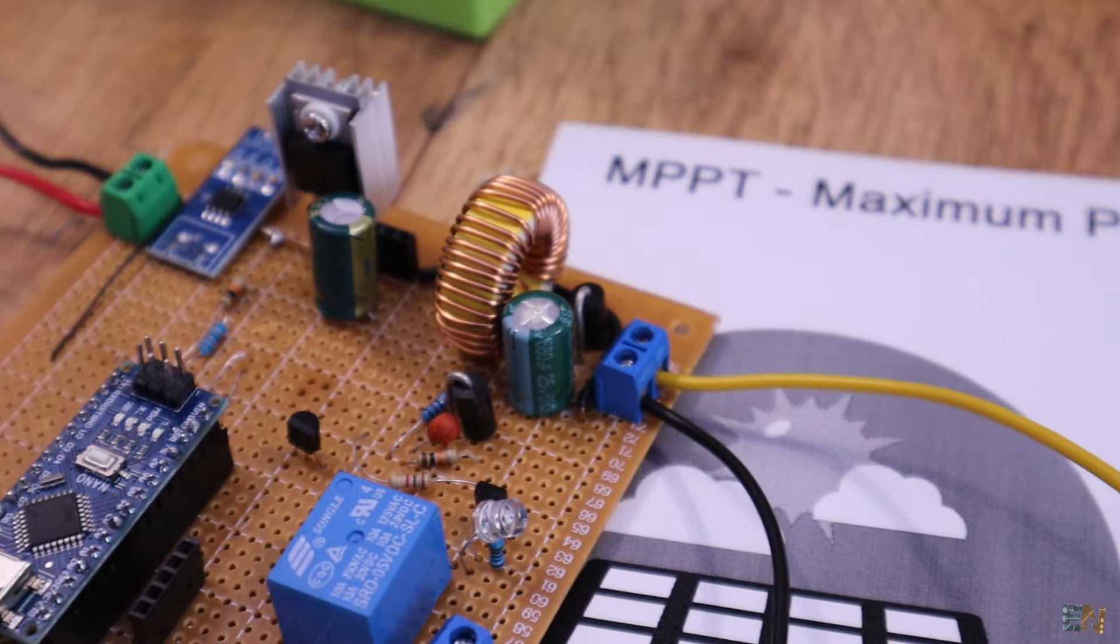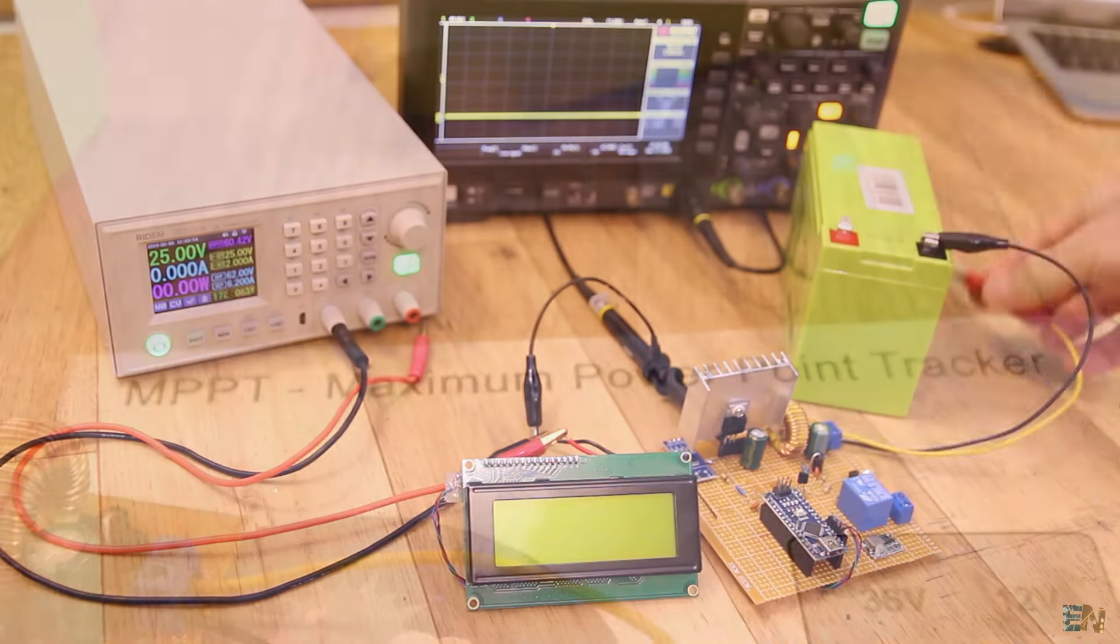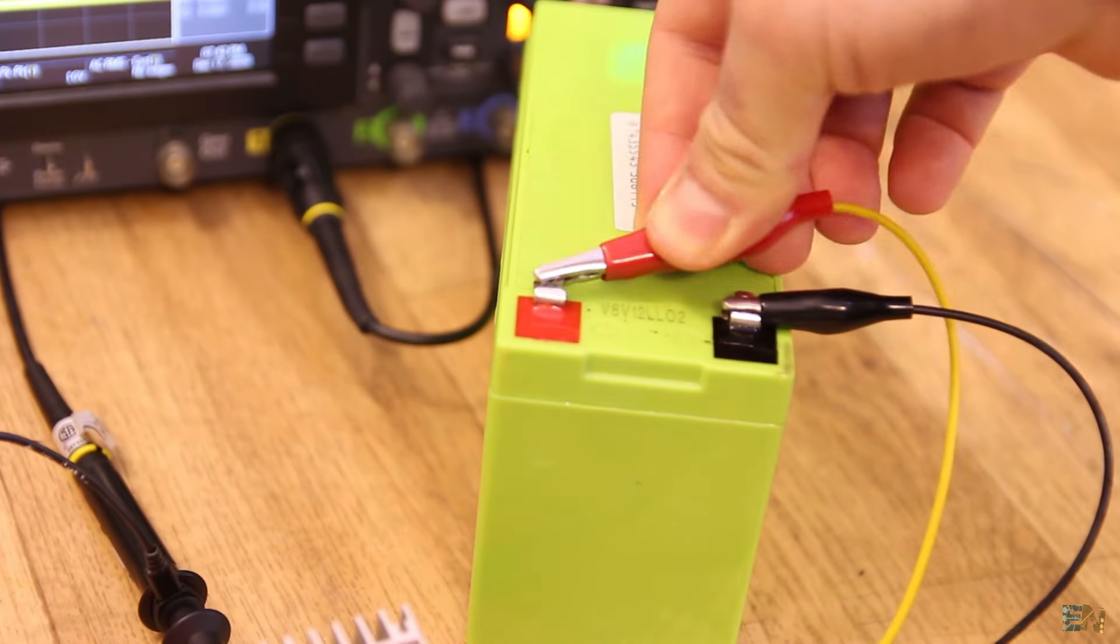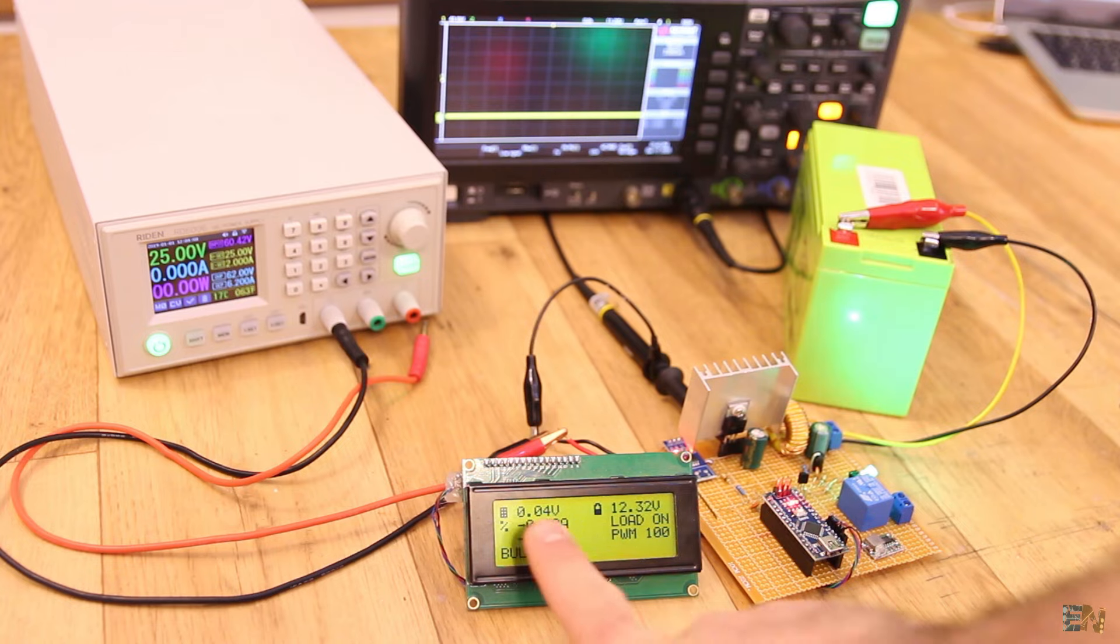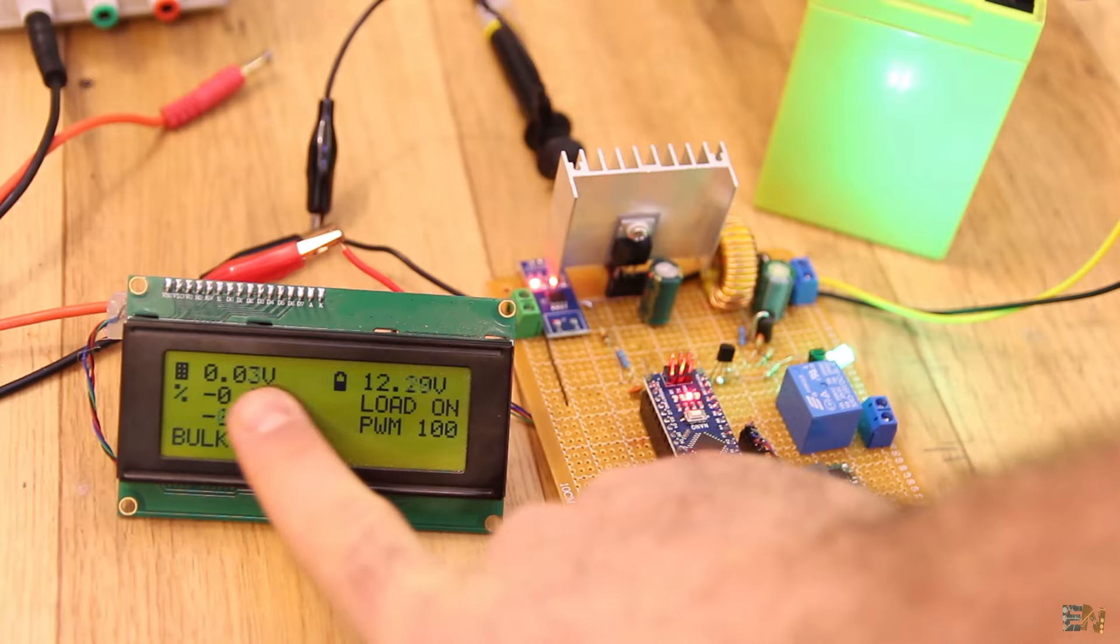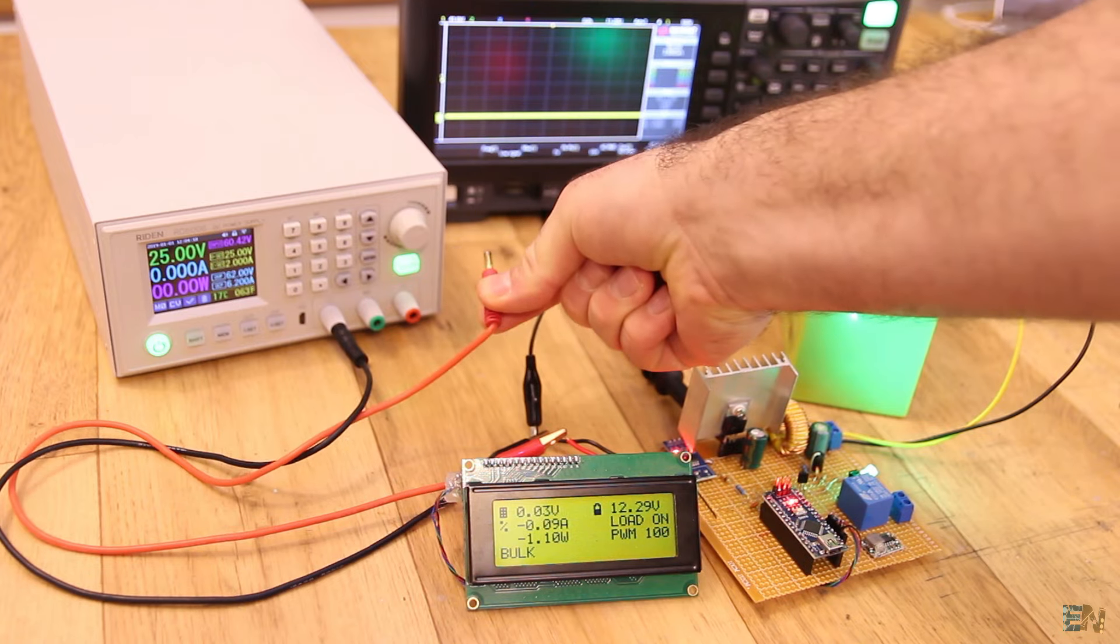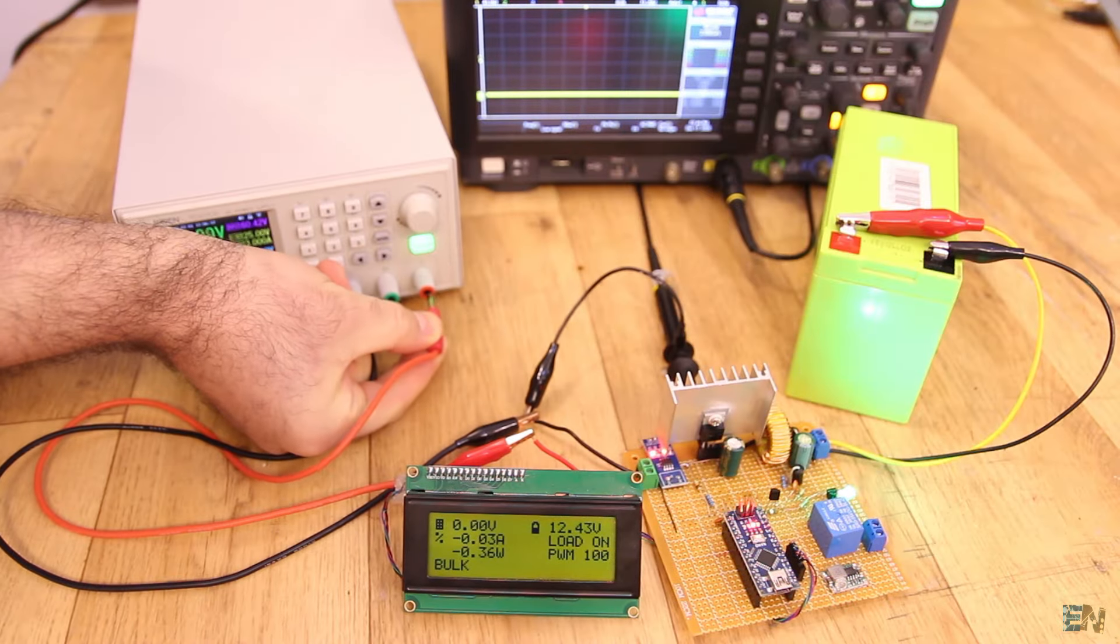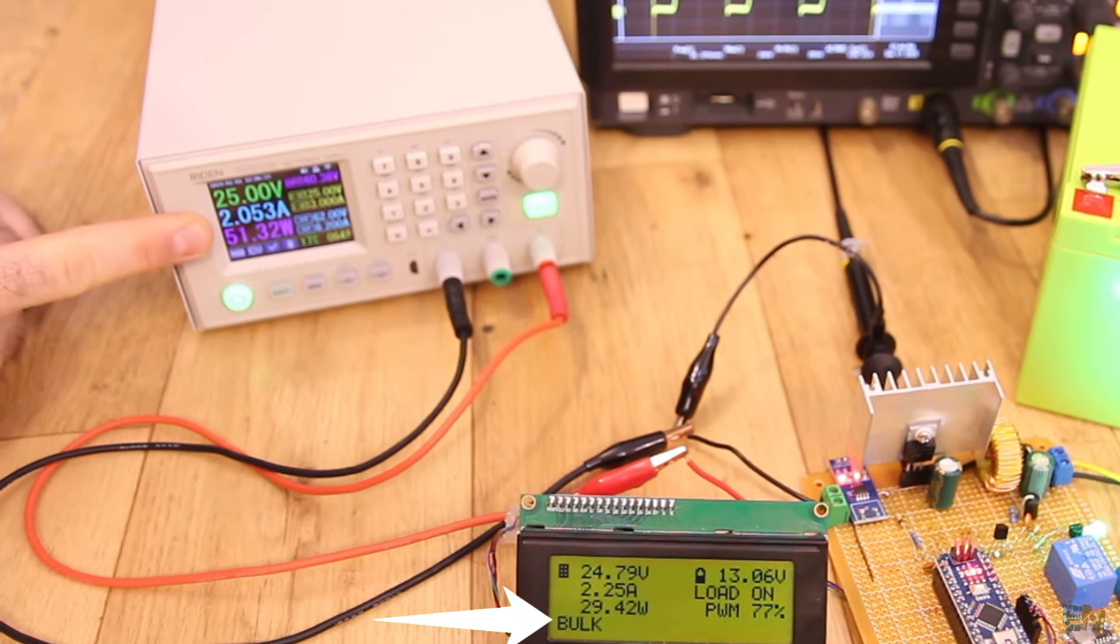What's up my friends, welcome back. Let's start with the test and then I'll explain you everything. First, I connect the battery at the output of the controller and the controller will start. The solar panel voltage is zero because we don't have anything connected yet. To simulate the solar panel, I connect my power supply. As you can see, the battery is charging in a bulk mode and the current is limited to 2A.